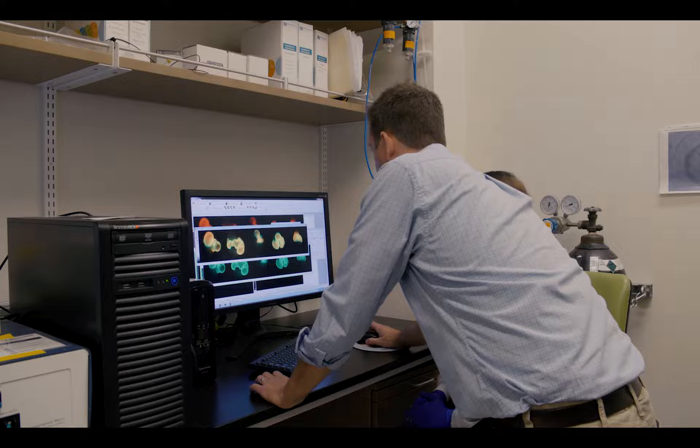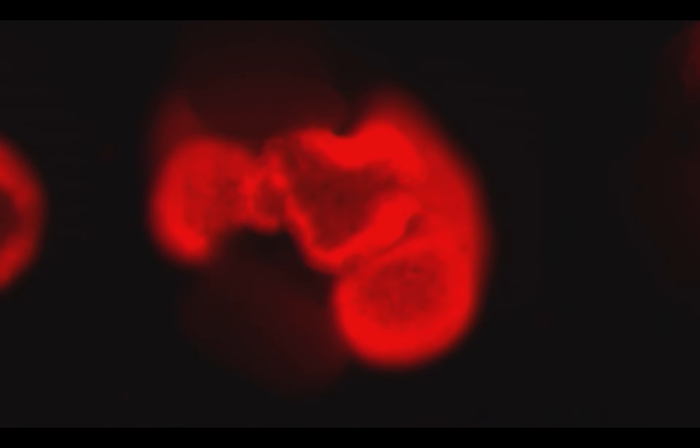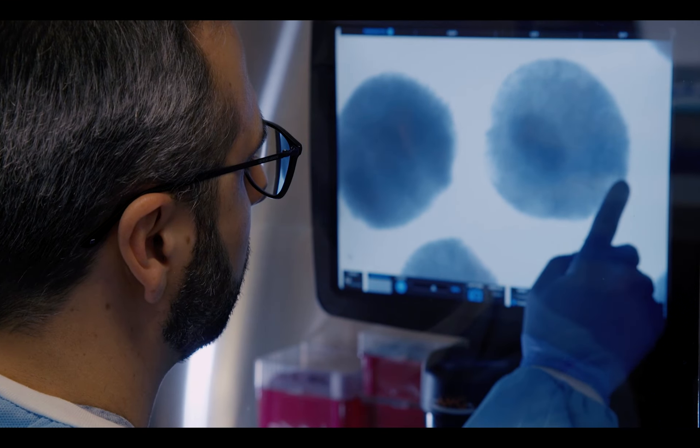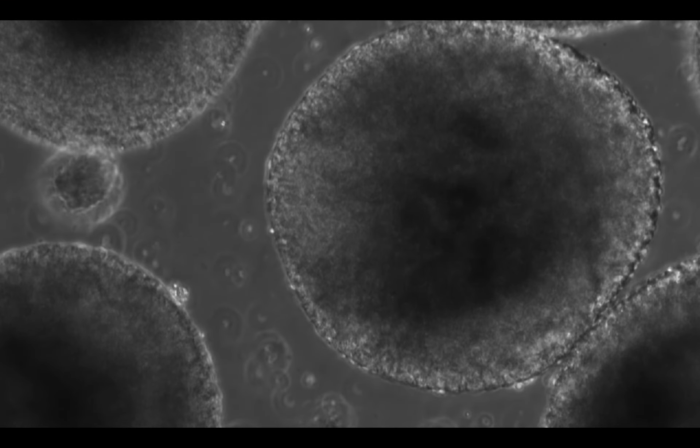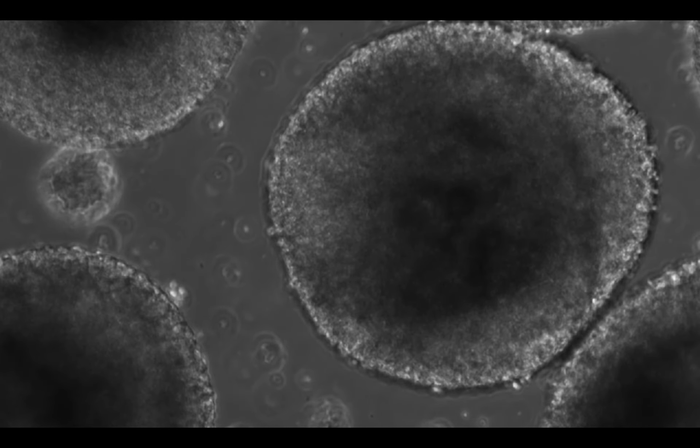Over time as we've developed this cerebral organoid retina co-culture system, we've recognized certain technical limitations. And one of them is that the retinas and the brains, they tend to be absorbed by one another. And so we need physical structures in order to separate them.